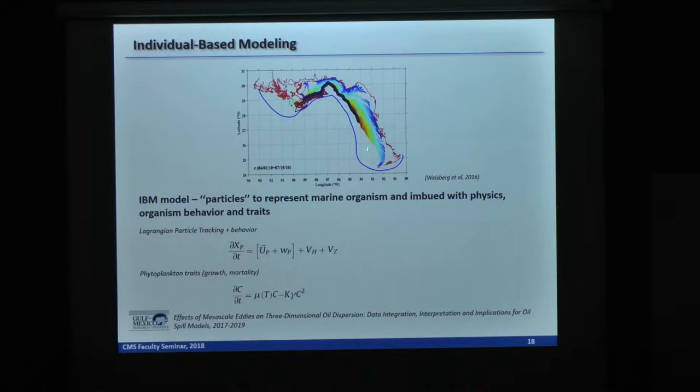So this is a particle tracking model Bob showed in his 2016 publication. This is already promising that shows if you release particles near the shelf, and one month later you receive them along the Florida coast.